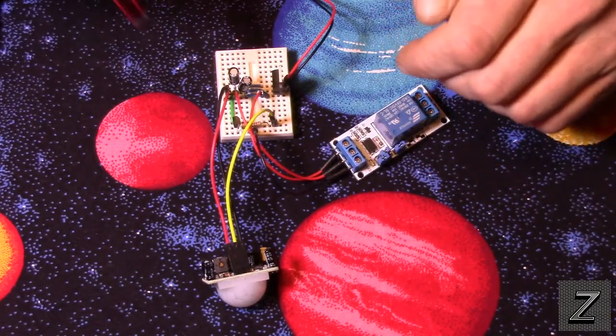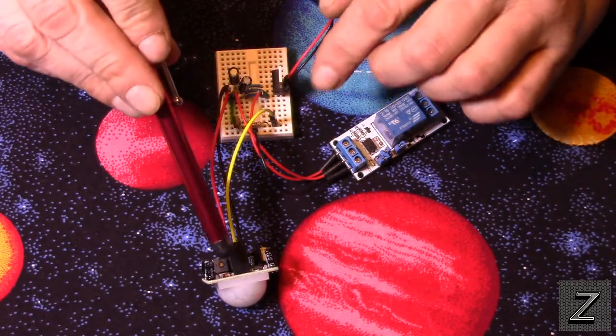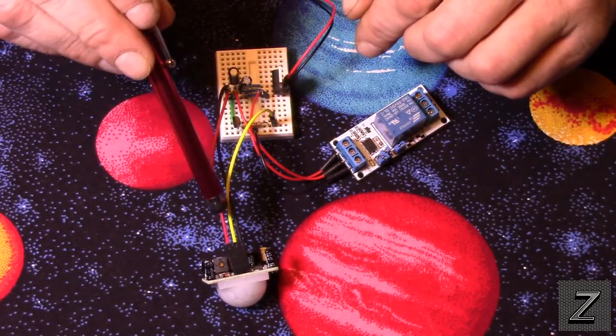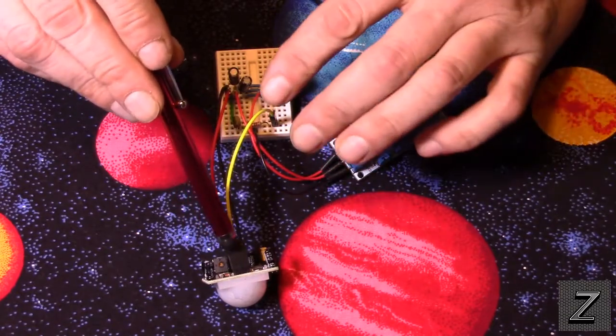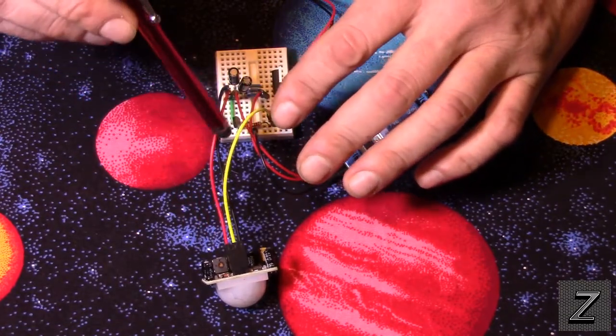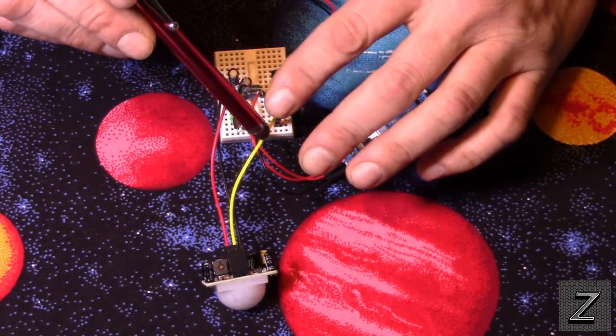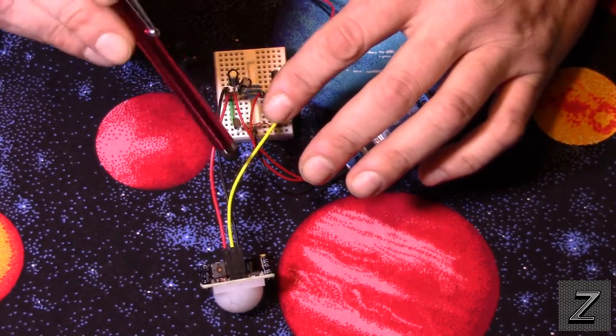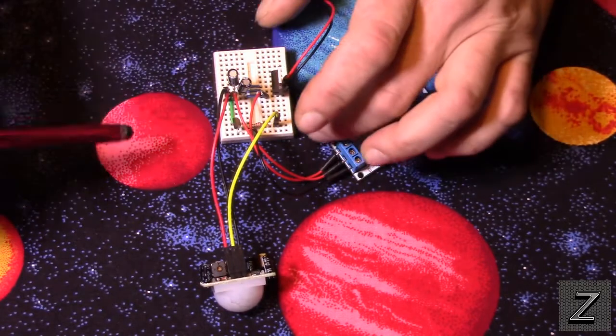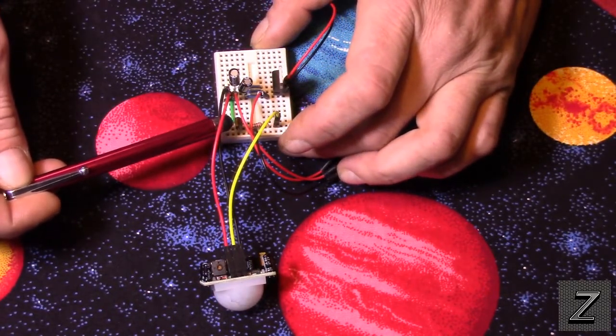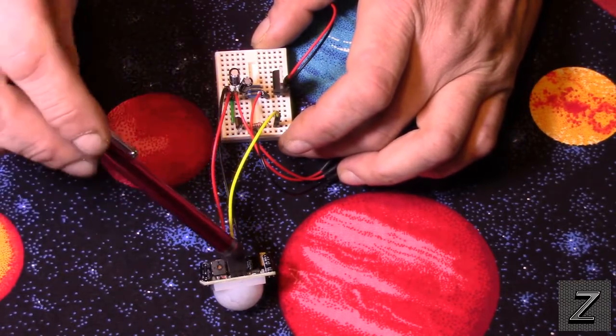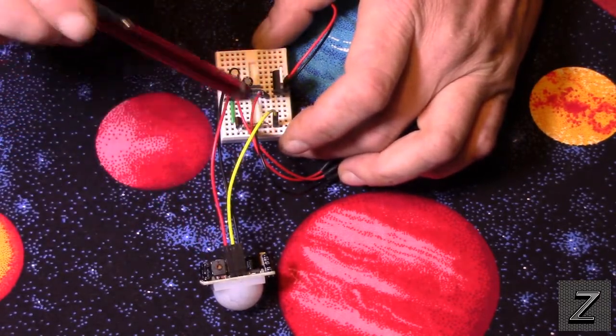All right, well, the next, what we have is the PIR sensor's output. Now, it runs on 5 volts. Well, this model does, and most of them I've seen on eBay and Amazon do. But the output, the pin out, the trigger, is only 3.3 volts. So, what I've done, it's kind of buried in here, but there's a little 2N2222 transistor, and I have this little yellow wire, which is the output, connected through a current limiting resistor to the base.